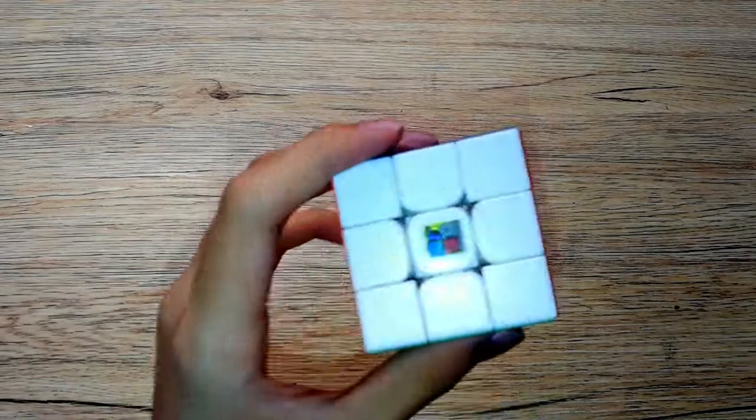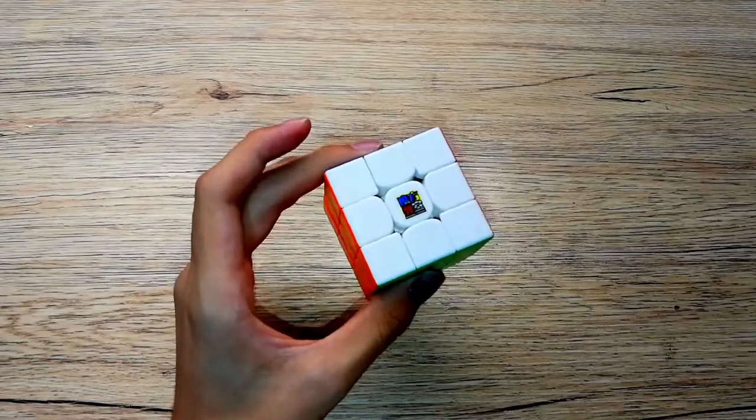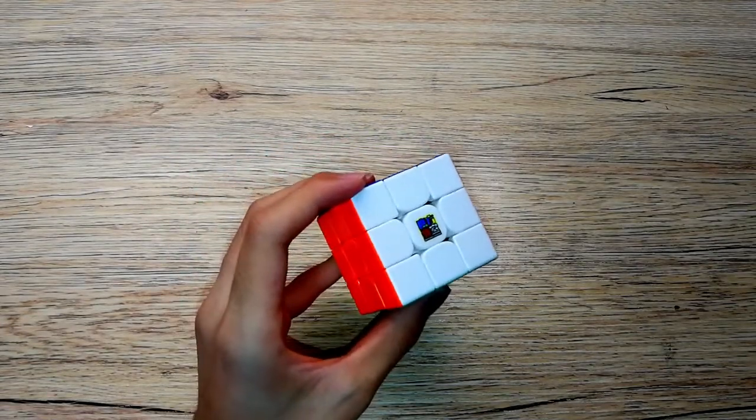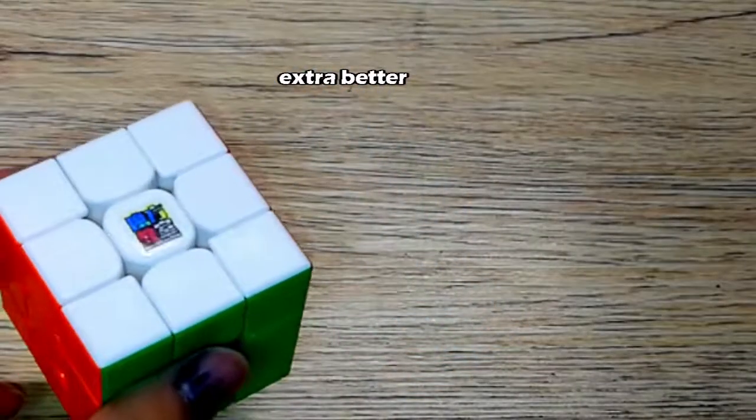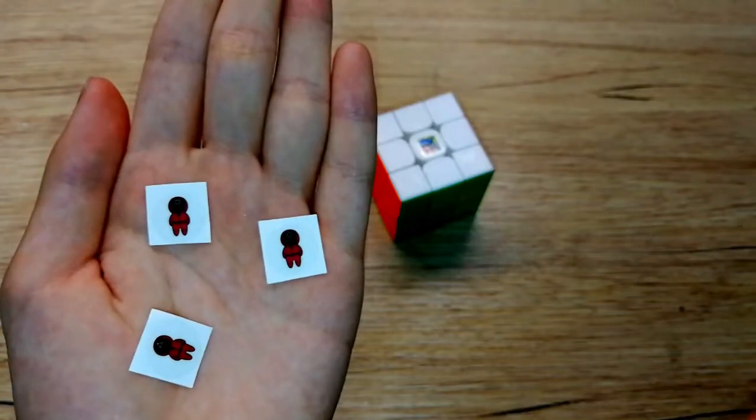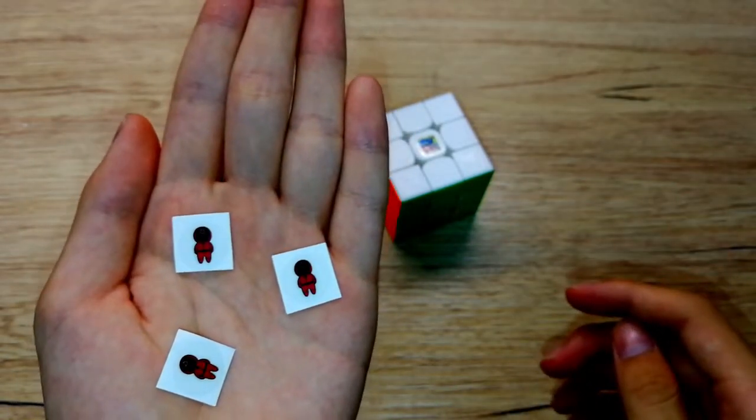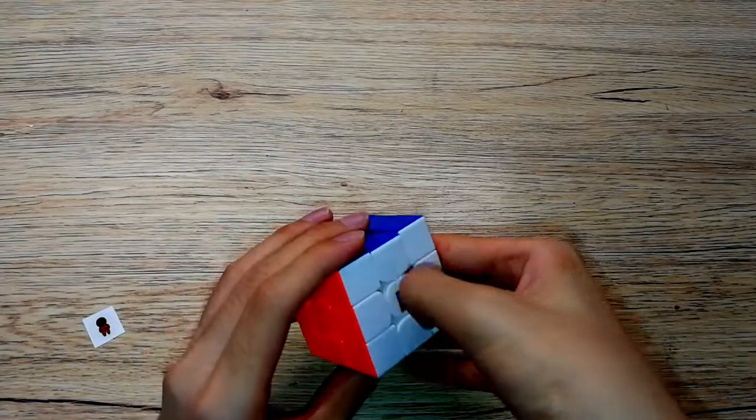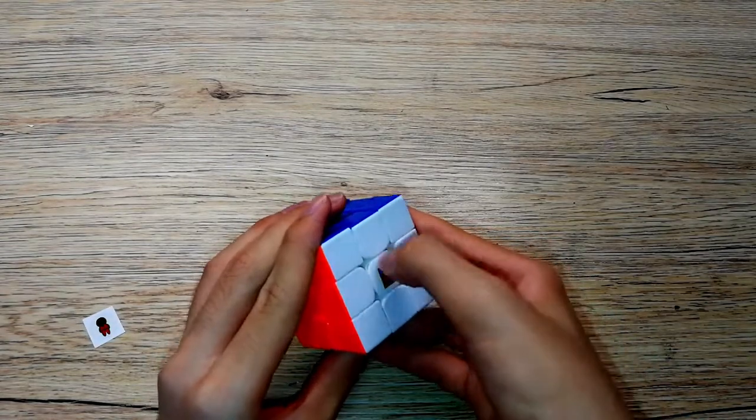We're done, this is it. We're going to change this ugly sticker to the 2021 Squid Game sticker. Year 2021 is a little bit better, so I'm going to add a little bit of 2021 on this cube to make it extra better. There are three of them, I'm going for the circle one.